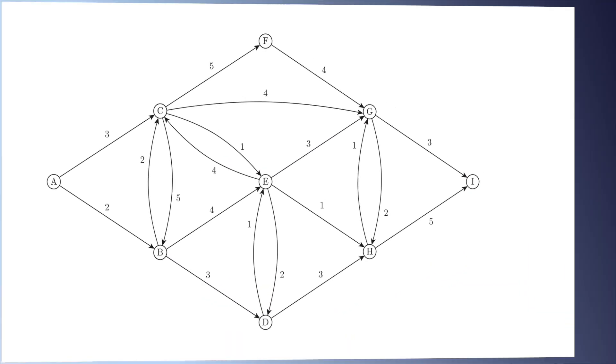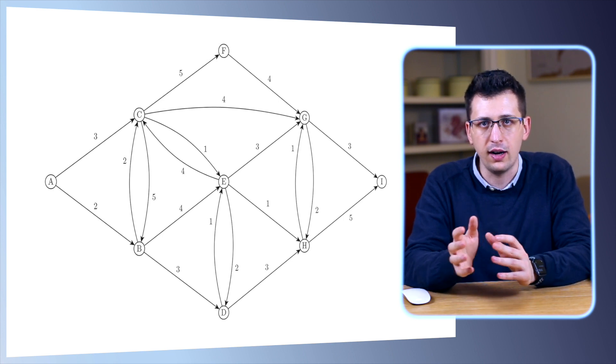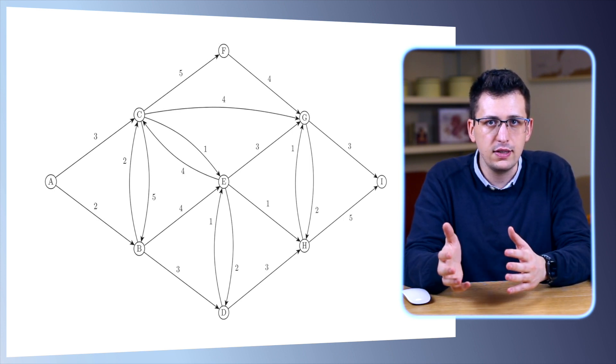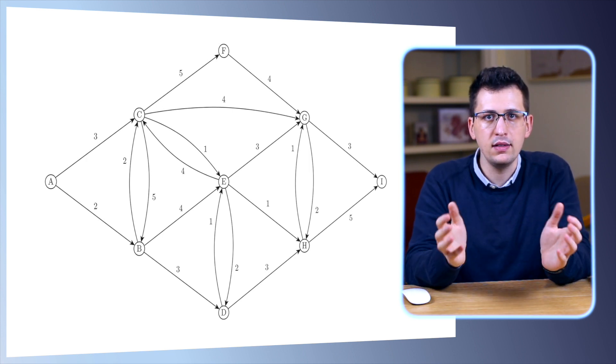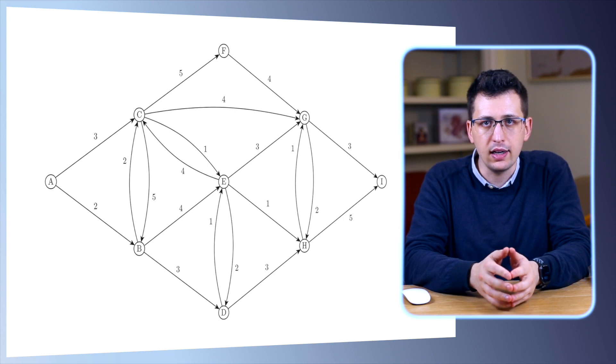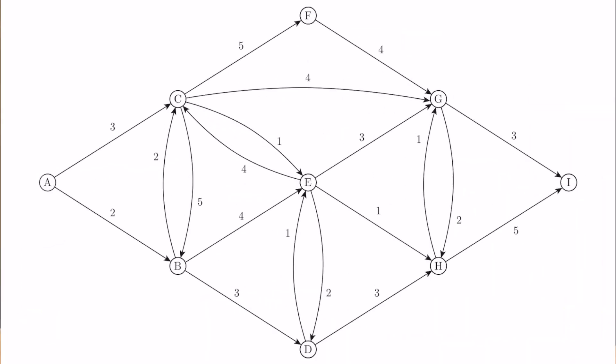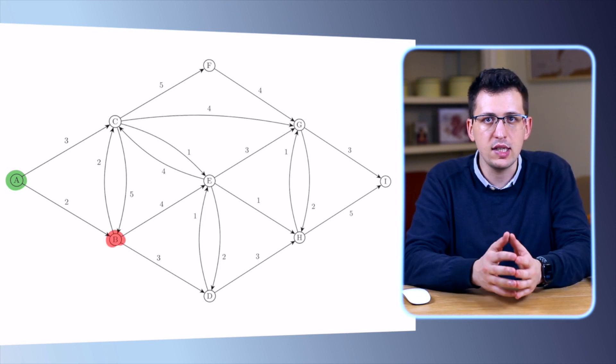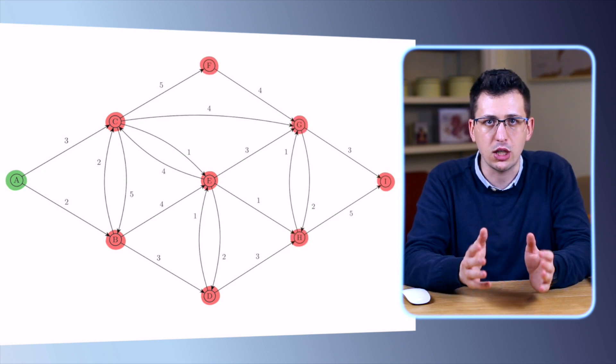Let's help ourselves with a simple graph to illustrate what's going on. We want to find the shortest path between node A and node I, at the opposite ends of the graph. There are quite a lot of possible paths, so enumerating all of them to find the shortest is not a very efficient method. Instead, let's explore the distances on the graph little by little, and classify the nodes into three categories: the ones we have already explored, marked in green; the ones we are currently exploring, marked in blue; and the ones we haven't explored yet, marked in red. Because we are starting from node A, we consider this node as explored and mark it in green. All other nodes are marked in red as unexplored.